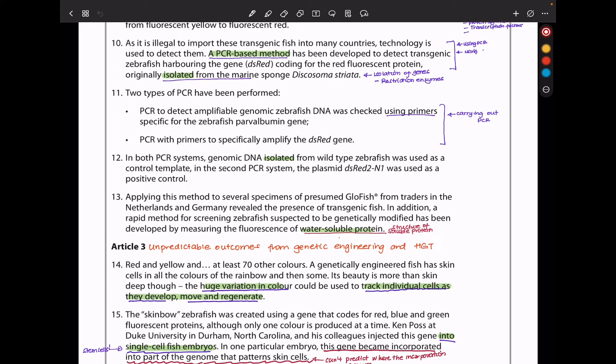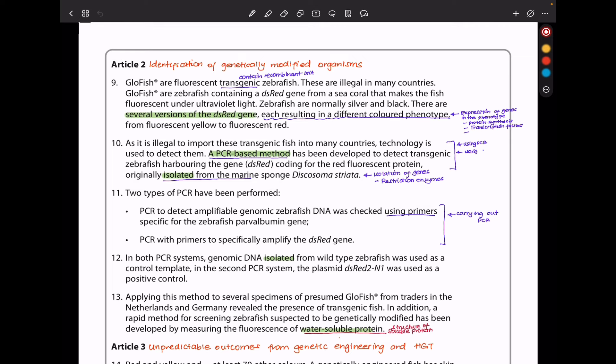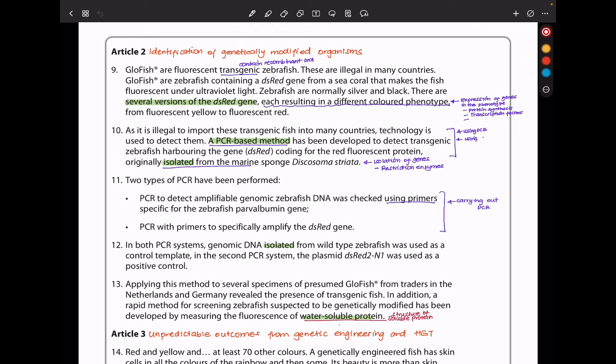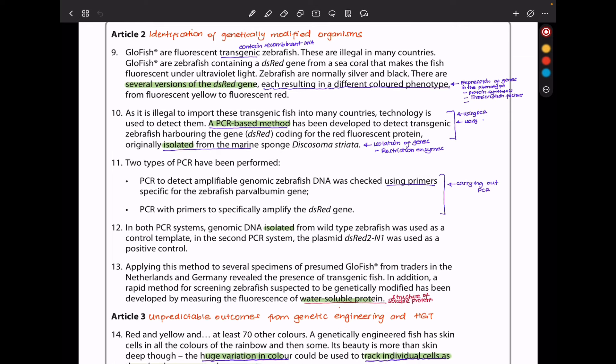So if we can look at Article 2 again, I annotated, we can see there is a lot of PCR gene isolation, as well as identification of genetically engineered or modified organisms.